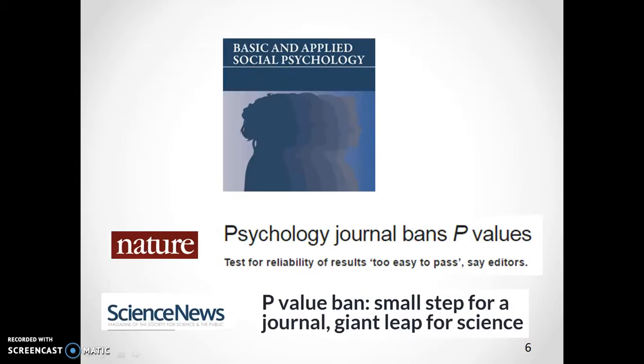Traditionally, p-values below 0.05 were considered to be essential in science. But in 2015, a scientific journal banned p-values, arguing that statistics were too often used to support lower-quality research. After that, Science and Nature endorsed that measure.